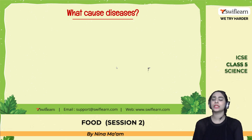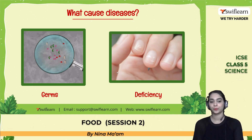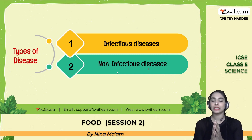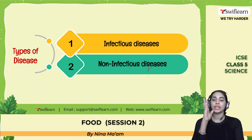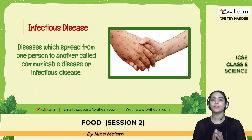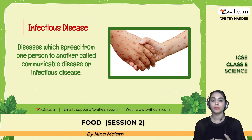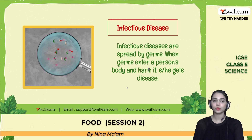Germs and deficiency can cause diseases. We can divide disease into two types: infectious disease and non-infectious disease. Infectious disease is communicable — it transfers from one person to another and can easily spread.